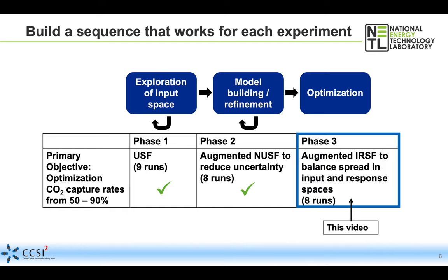In phase two we allocated eight runs for reducing uncertainty in our model via a non-uniform space filling design. Now we're in phase three, where we're going to use input response space filling designs to balance the spread in both the input and response spaces, making sure that as we move towards the optimum we're not losing sight of covering capture rates from 50 to 90 percent. If you'd like to see how phases one and two came together, you can check out the videos on creating uniform and non-uniform space filling designs in FOCUS.